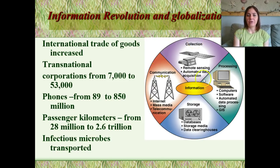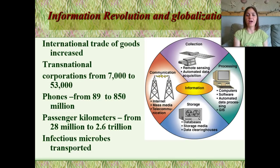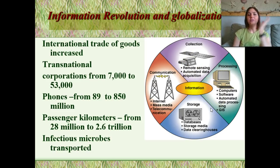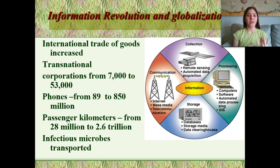So right here we have information collection: remote sensing, automatic data acquisition. We have computer processing, software, automated data processing, GIS. We have storage databases. We have lots of communication from the internet and mass media telecommunication devices.